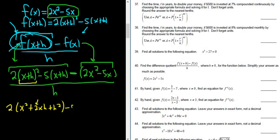Then distribute the 5, so minus 5x minus 5h. And there's a negative 1 here so you distribute that, so minus 2x². And then negative and negative is positive, so plus 5x, all being divided by little h.